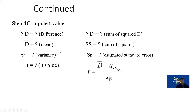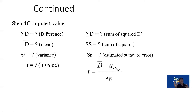To compute the dependent t-test value, we need the sum of the differences, the mean difference, the variance, the sum of squared differences, and the estimated standard error. In an independent t-test, we look at the difference between means compared to the hypothesized population difference divided by the standard error. In a dependent t-test, we look at the mean difference compared to the population divided by the standard error of the differences — similar structure but different key variables.